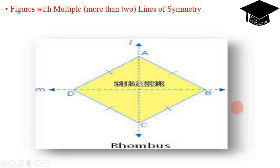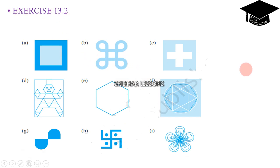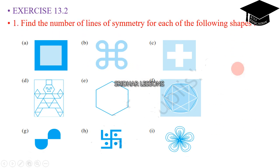A rhombus can be divided horizontally as well as vertically, and it also forms the line of symmetry. Exercise 13.2: Observe these pictures carefully. Find the number of lines of symmetry for each of the following shapes.